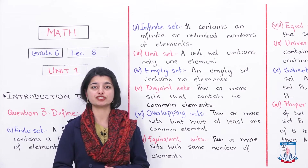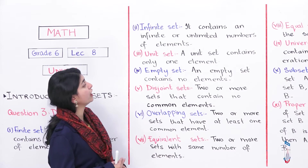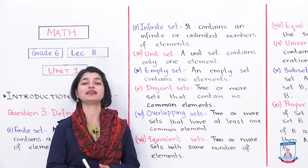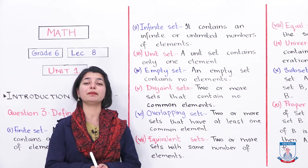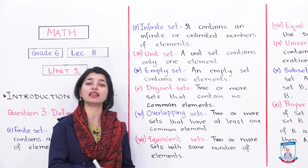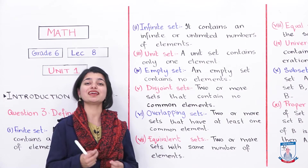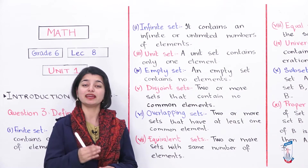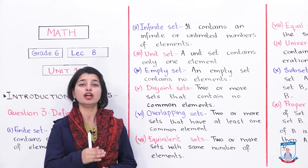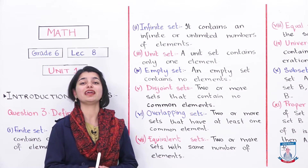The second definition is infinite set. An infinite set contains an infinite or unlimited number of elements — it is a set in which there is no limit. If you have integers, you can keep writing. If you have hundreds of numbers, you can keep writing. There is no limit. So we say that this set is an infinite set — it will never be finished. In the end, you put dots (dot dot dot) to show that the set continues forever. Such sets are called infinite sets.